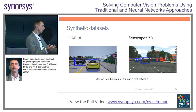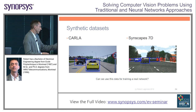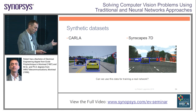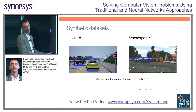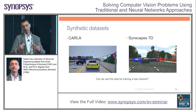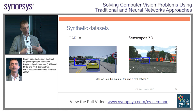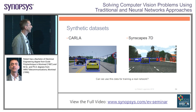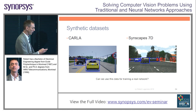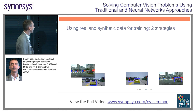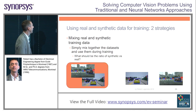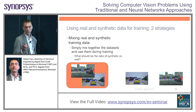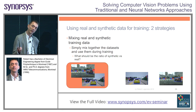So the question is: is it a good idea to use synthetic images in order to train a network that will be deployed in the real world? We did a couple of experiments, and the first question is: how do we train?